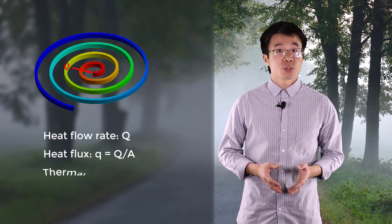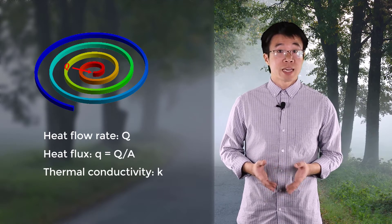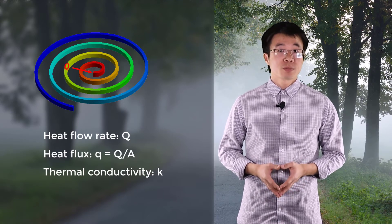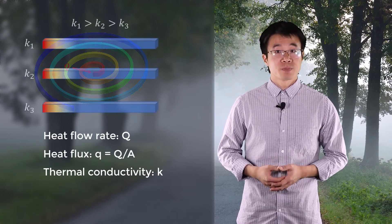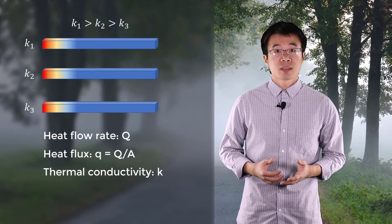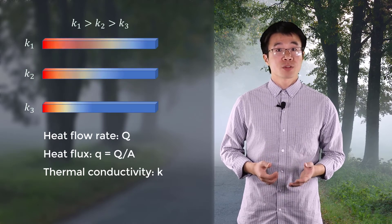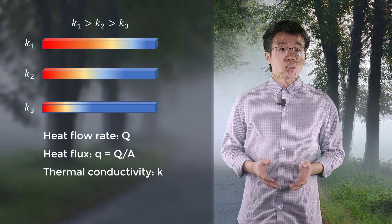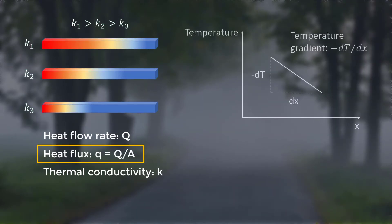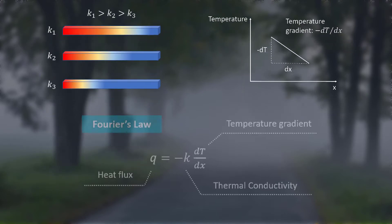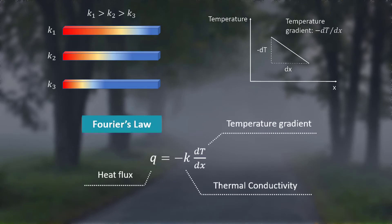Another important term we want to introduce is the thermal conductivity k. It's a material parameter that describes a material's capability of transferring heat. The larger k is, the faster a material transfers heat through conduction. Fourier's law describes the relationship between heat flux q and the temperature gradient, which can be understood as the temperature change in spatial coordinate. It states that heat flux equals thermal conductivity multiplied by the negative of the temperature gradient.